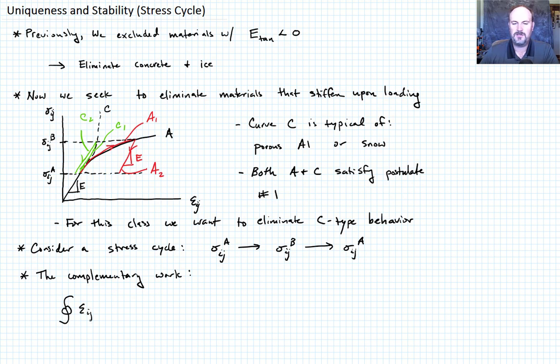So the complementary work is going to be given by, now we're going to integrate over this cycle. And the complementary work is going to be epsilon_ij times d sigma_ij. That's the definition of complementary work. That's going to be equal to, we basically have two paths we care about. So along path one will go up from sigma_ij^a up to sigma_ij^b of epsilon_ij.